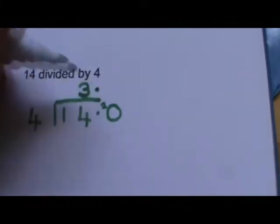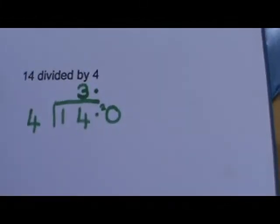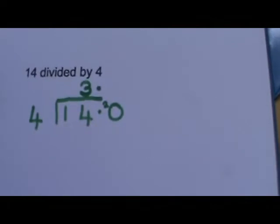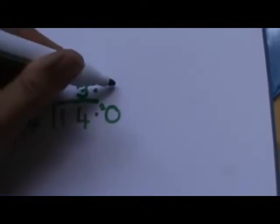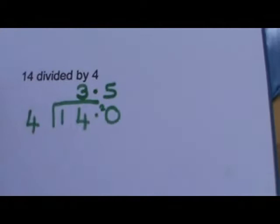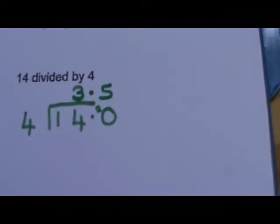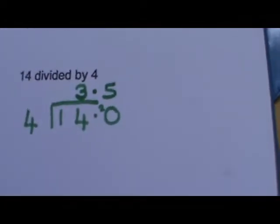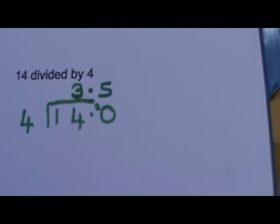So now, because we've reached the point, we've put the point in the answer. And we say, how many 4s are there in 20? Well, that's 5. So 14 divided by 4 is 3.5, or 3 and a half.